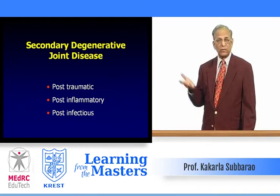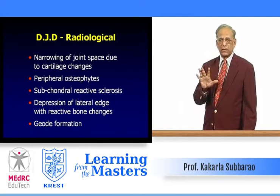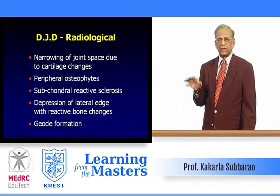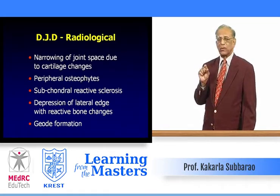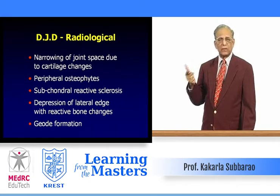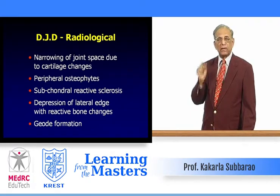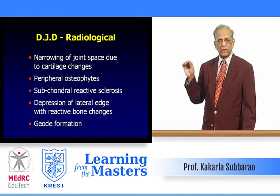The radiological findings of degenerative joint disease: on a conventional AP or lateral view of any joint, you recognize DJD by narrowing of joint space. The joint space includes cartilage — since cartilage is radiolucent, when it thins the joint space narrows, and when completely atrophied the space is obliterated. Peripheral or marginal osteophytes occur at the articular margins, as if to buttress a weak joint.